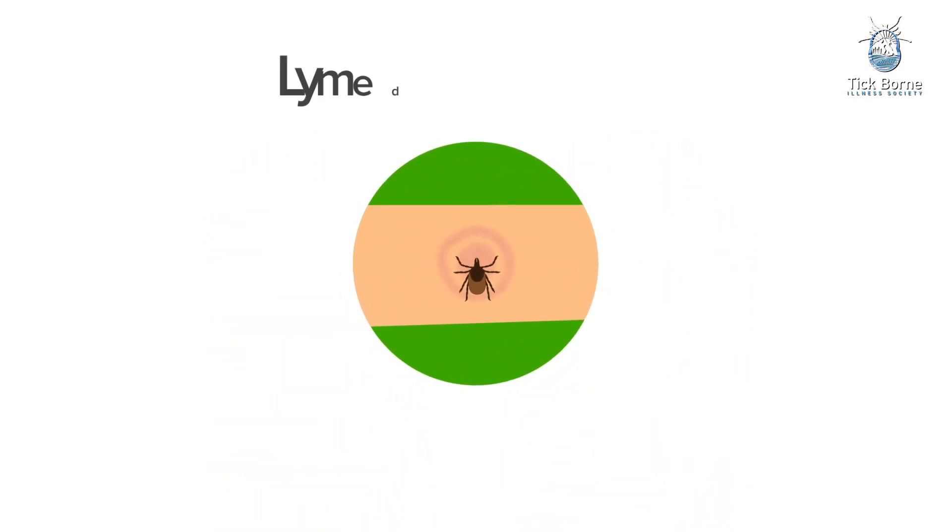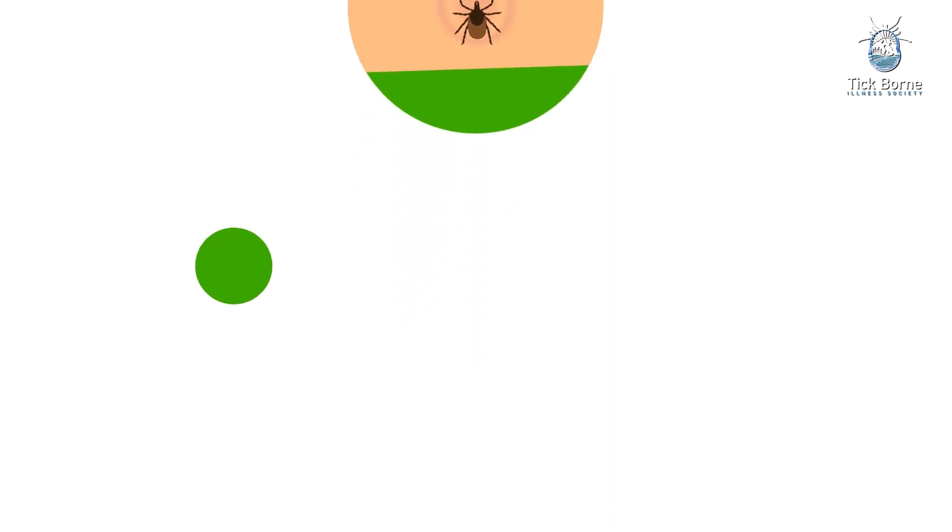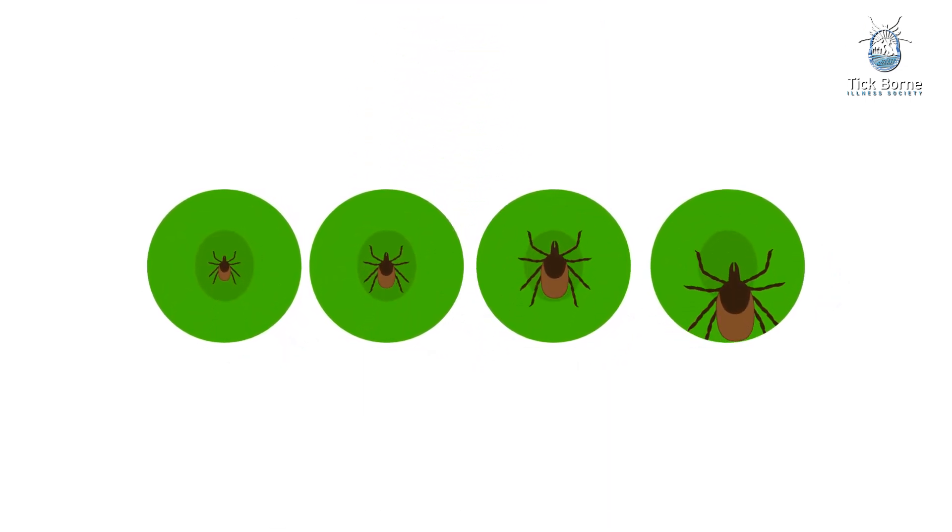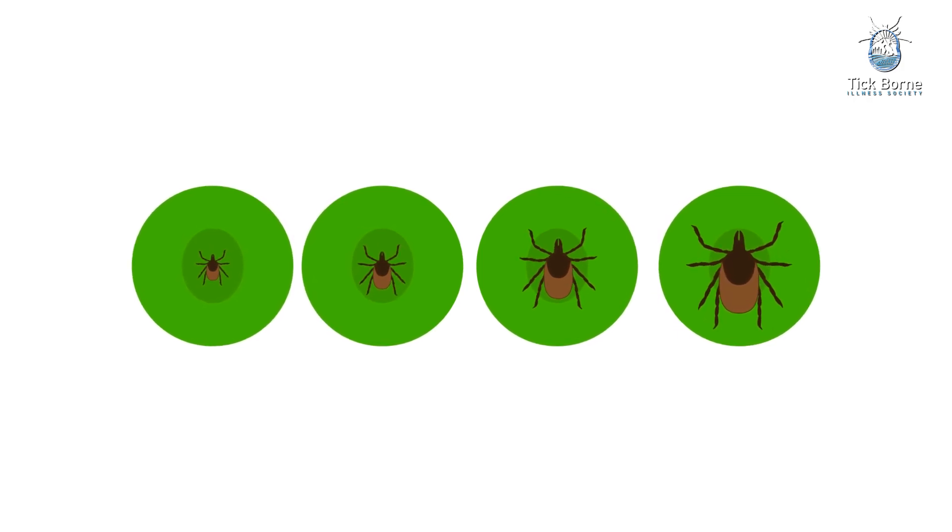Adult ticks can also transmit Lyme disease bacteria, but they are much larger and much more likely to be discovered and removed before they have had time to transmit the bacteria.